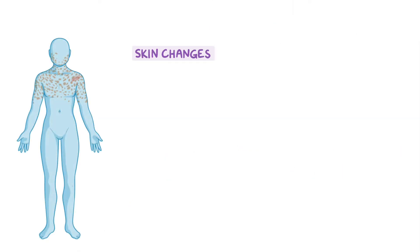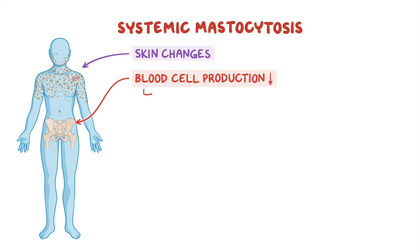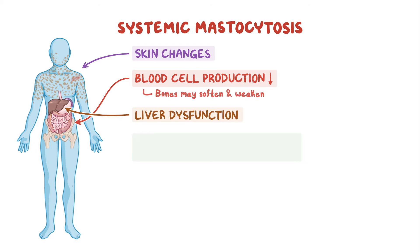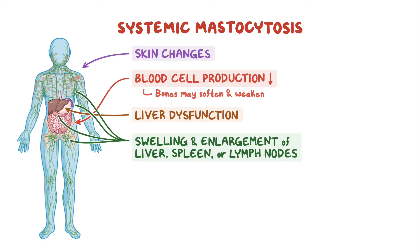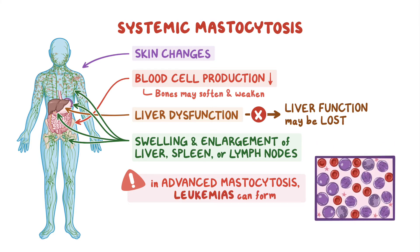Some skin changes may be present in systemic mastocytosis, but these forms also involve dysfunction in other tissues. Blood cell production in the bone marrow may decrease and bones may soften and weaken. In addition to liver dysfunction, swelling or enlargement of the liver, spleen, or lymph nodes may occur. In aggressive systemic mastocytosis, liver function may be lost, and in advanced mastocytosis, other blood disorders such as leukemias can form.